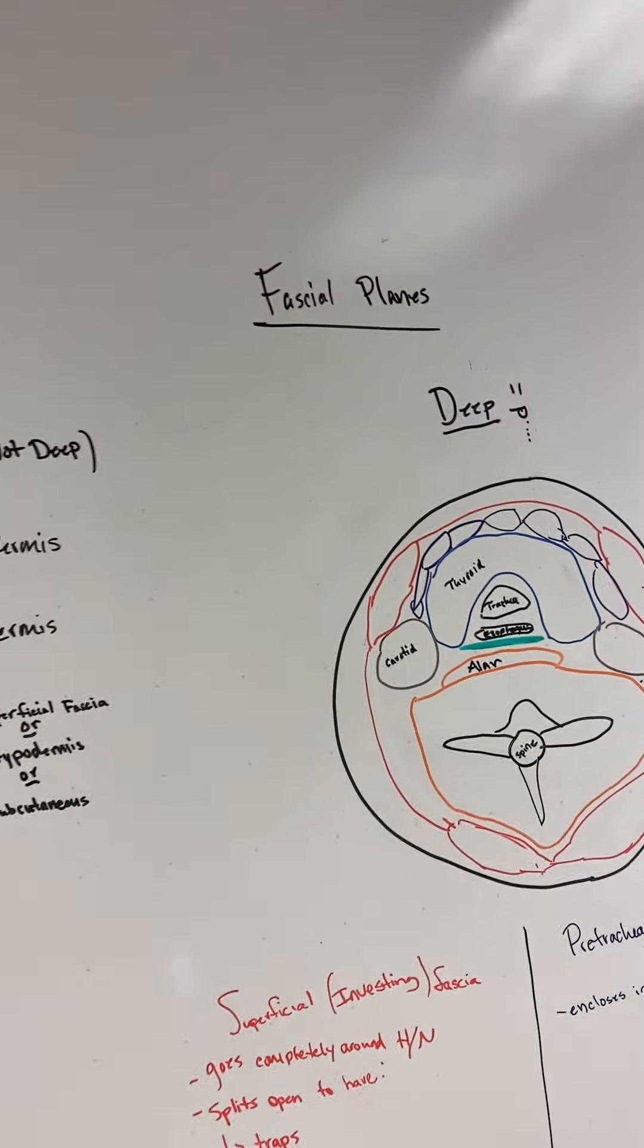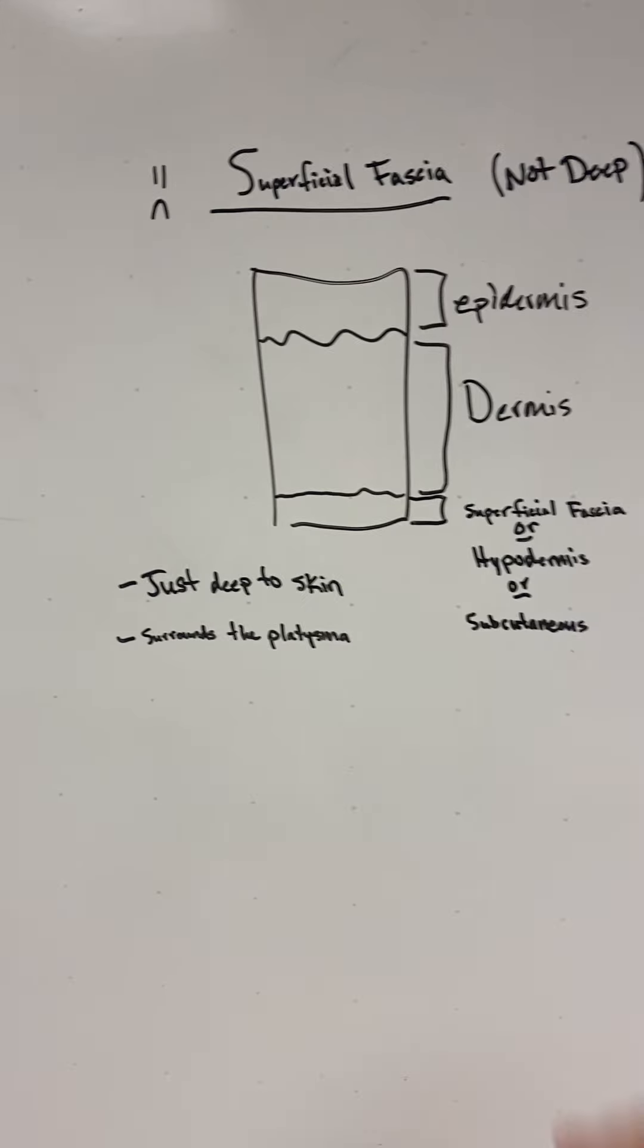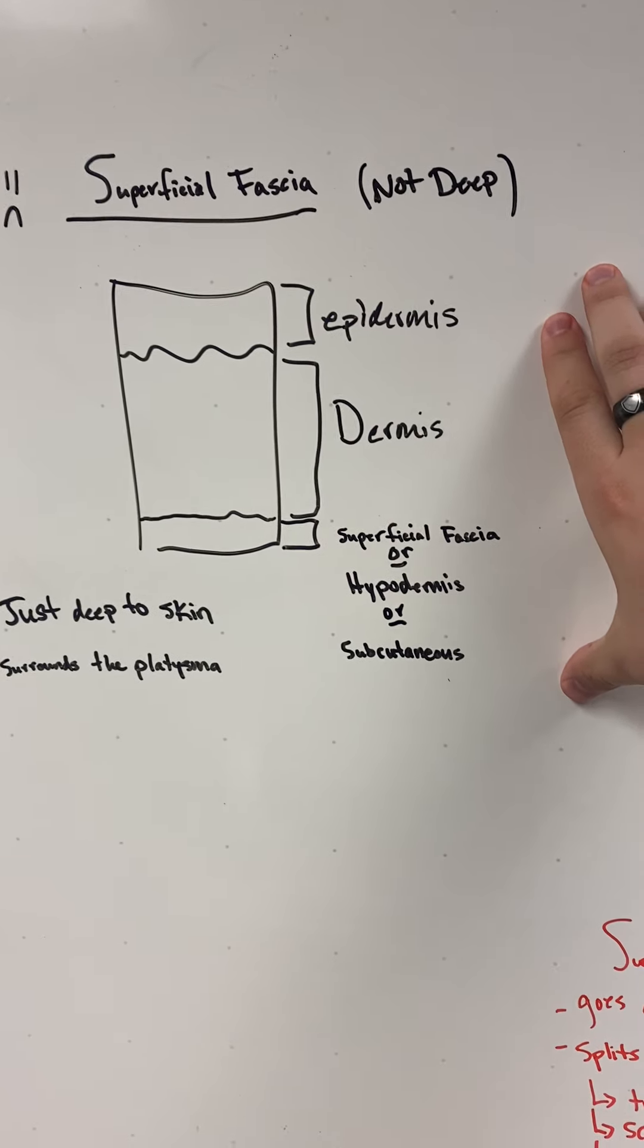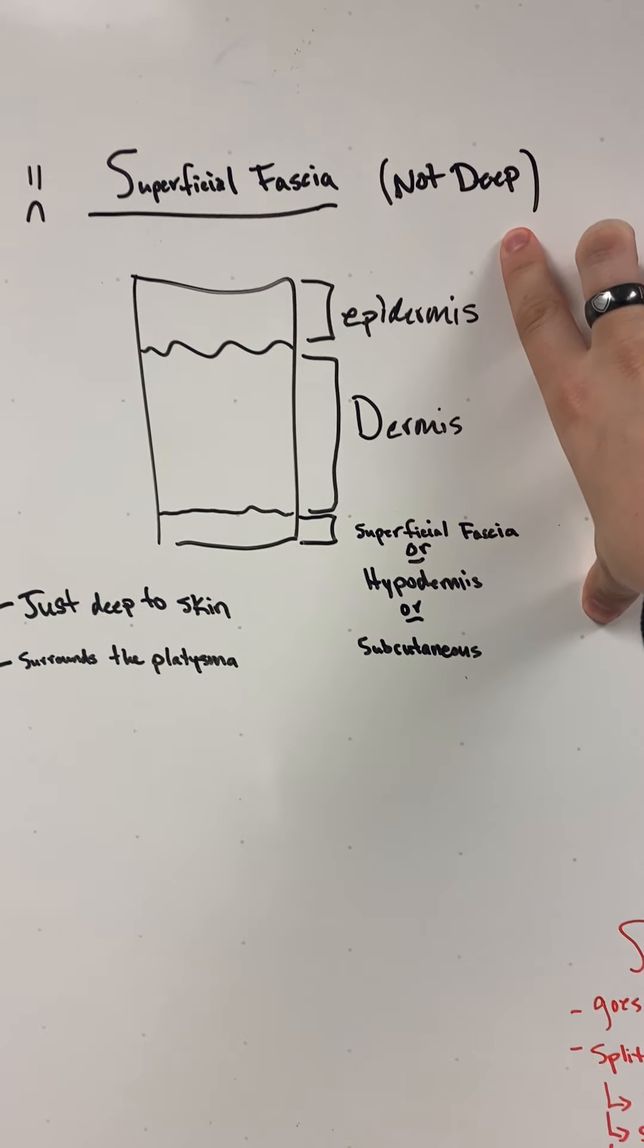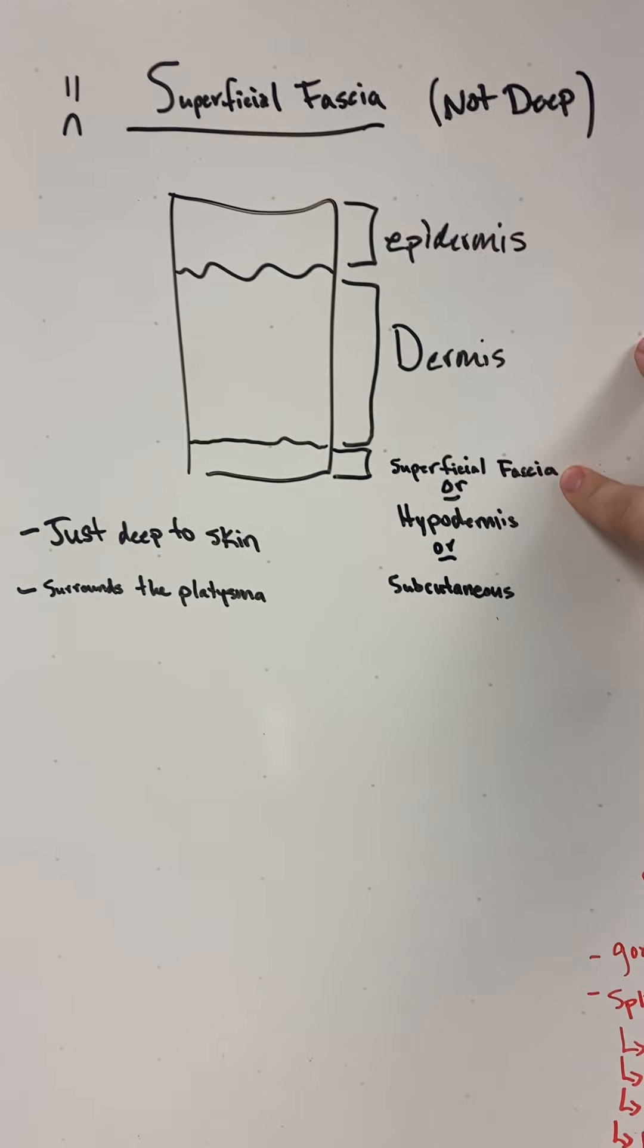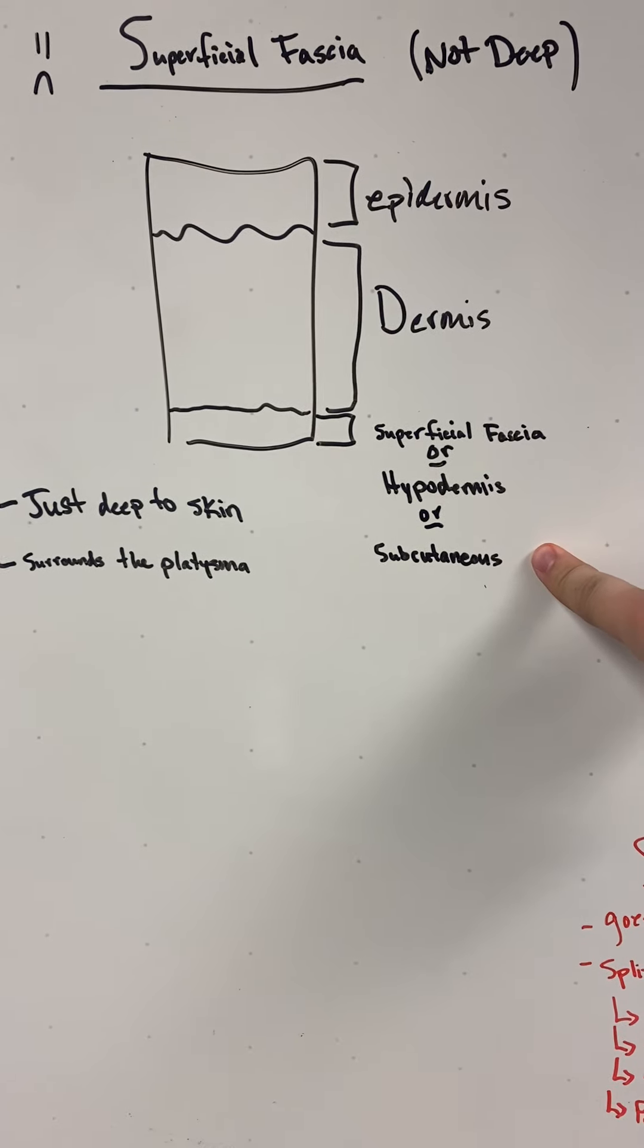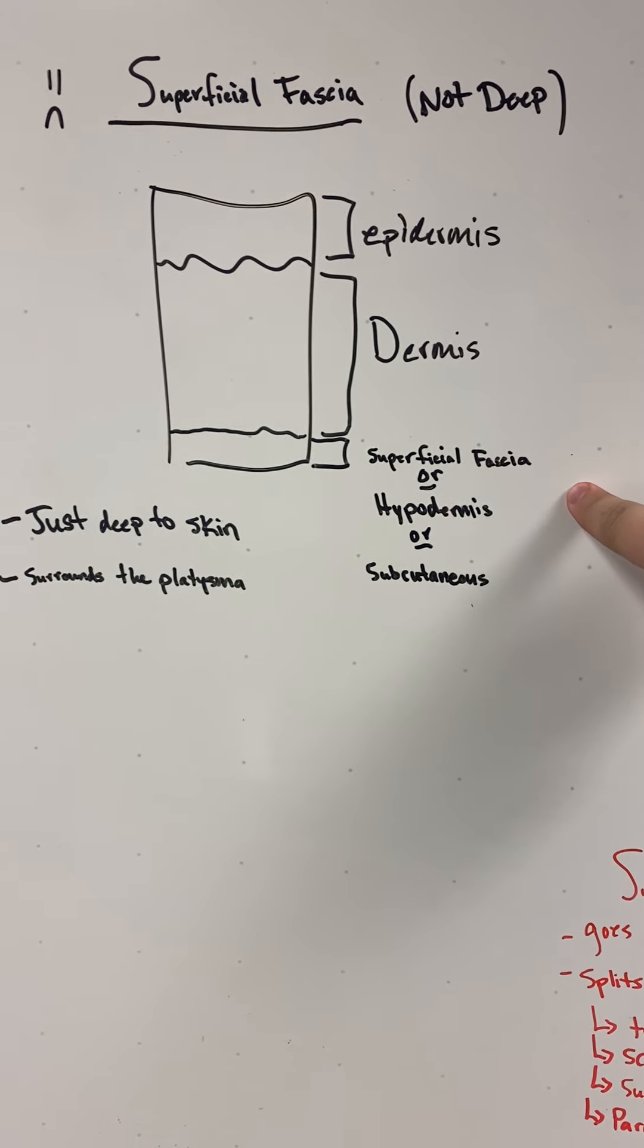Alright guys, I'm back which means we're gonna do facial planes, maybe spaces later. So we have superficial fascia, which is not part of the deep fascia. We have epidermis, dermis, and this bottom layer we call hypodermis or subcutaneous, but it's also called the superficial fascia.